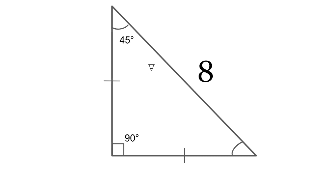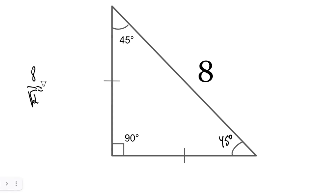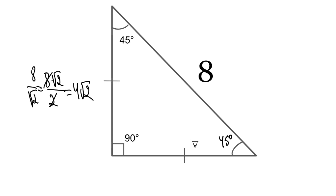Next, similarly, we have hypotenuse 8. The angles would be 45 degrees and each side would equal 8 divided by √2, or 8 multiplied by √2 divided by 2, which gives us 4√2 and 4√2.